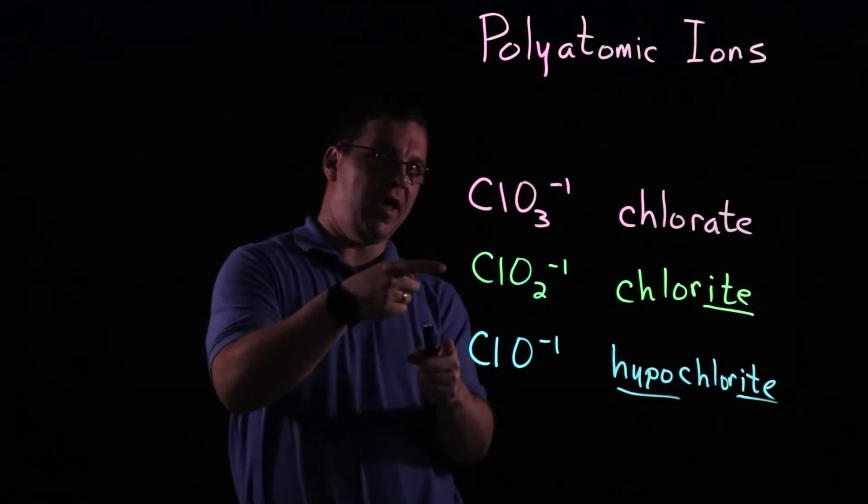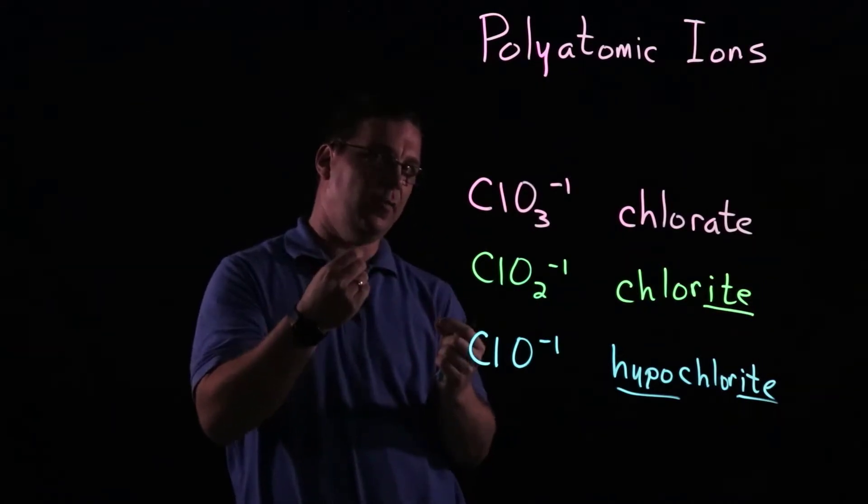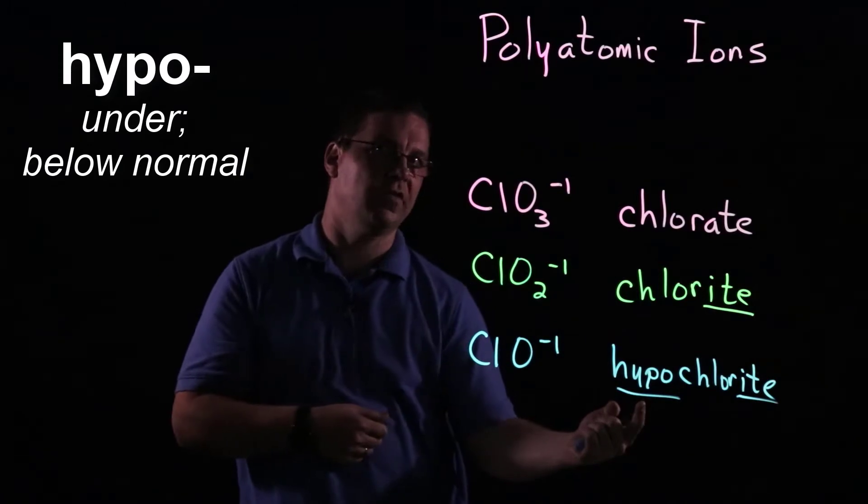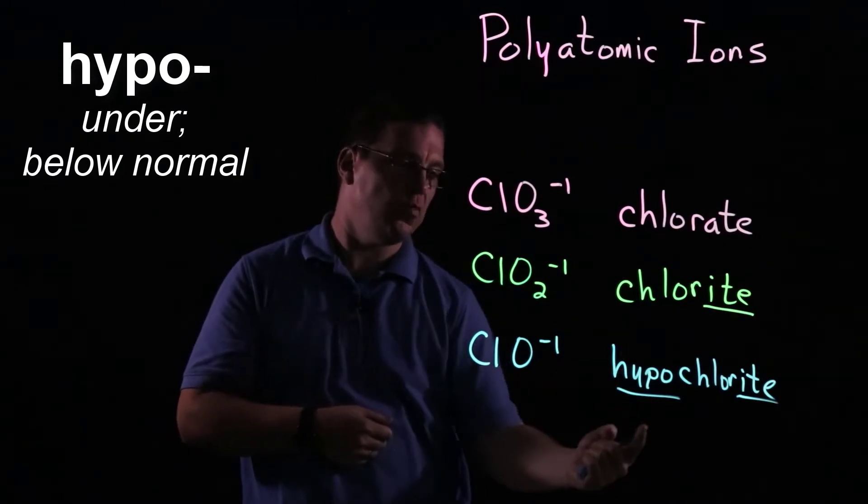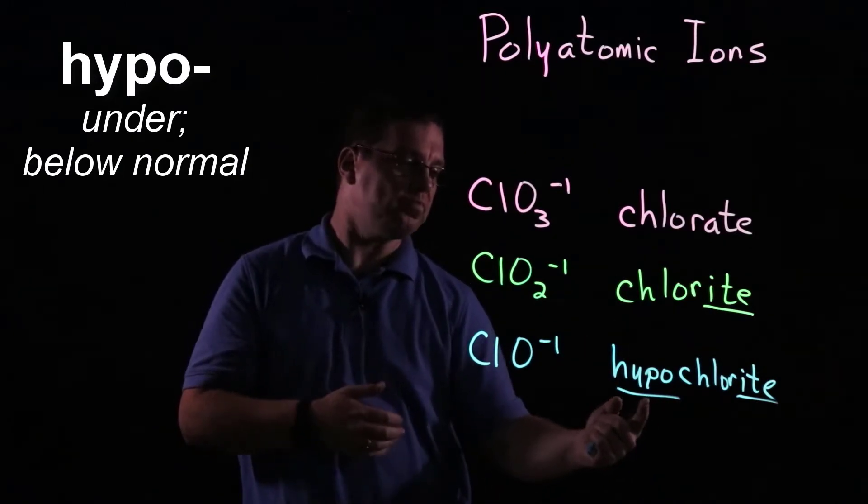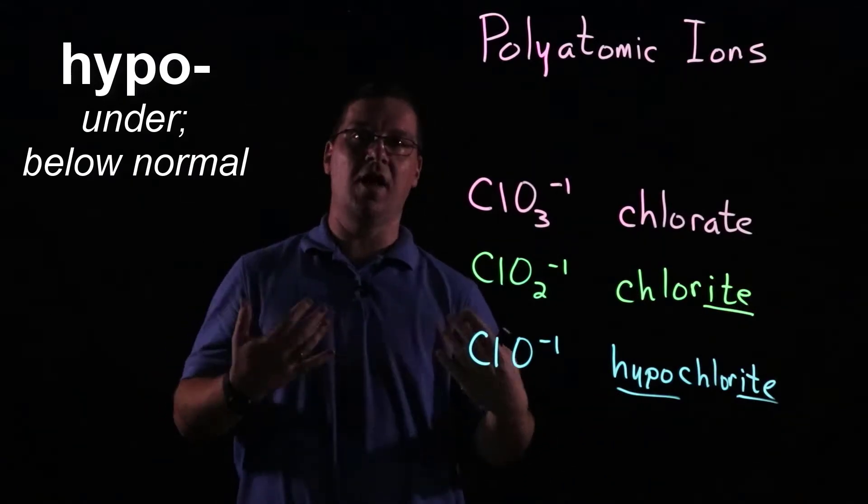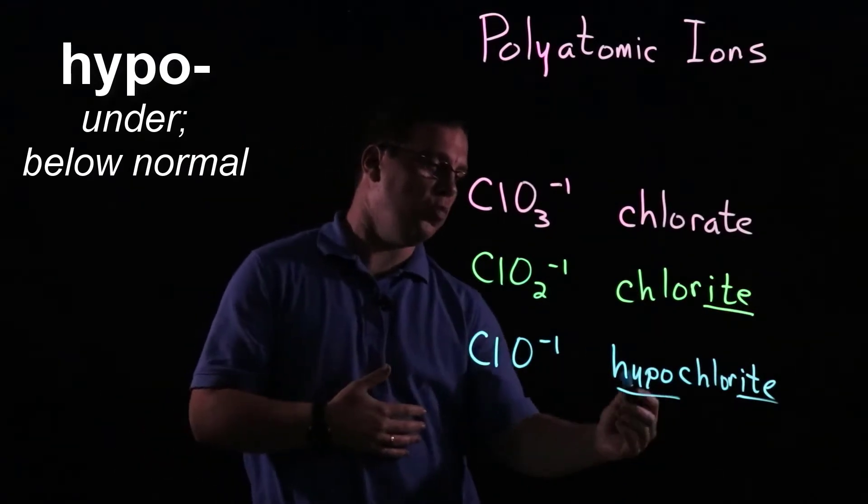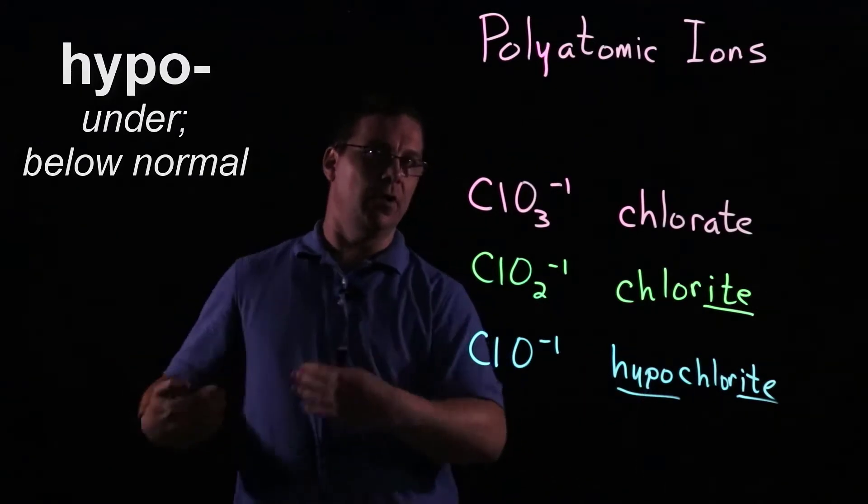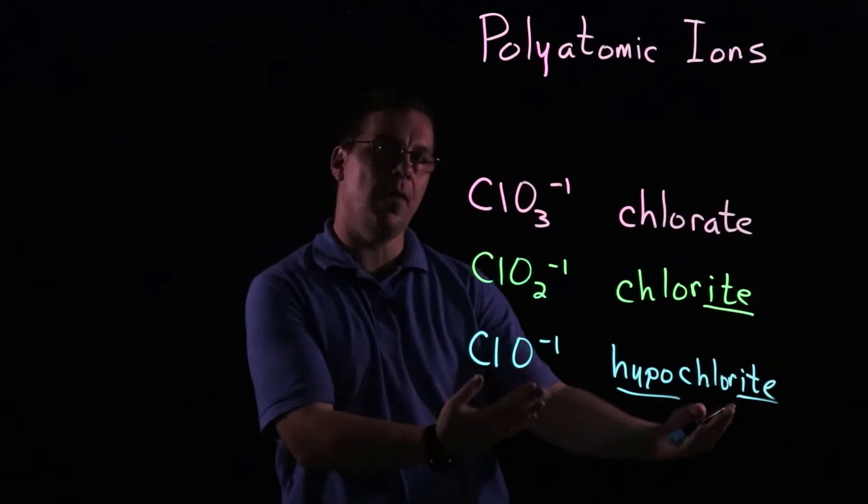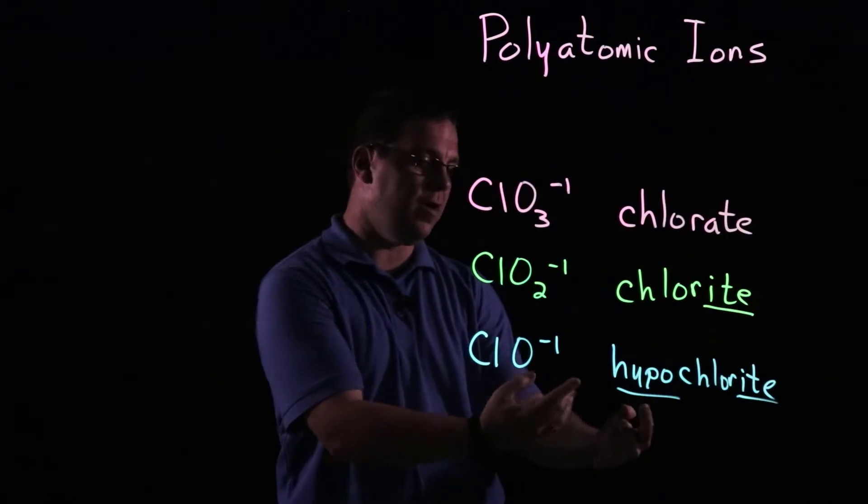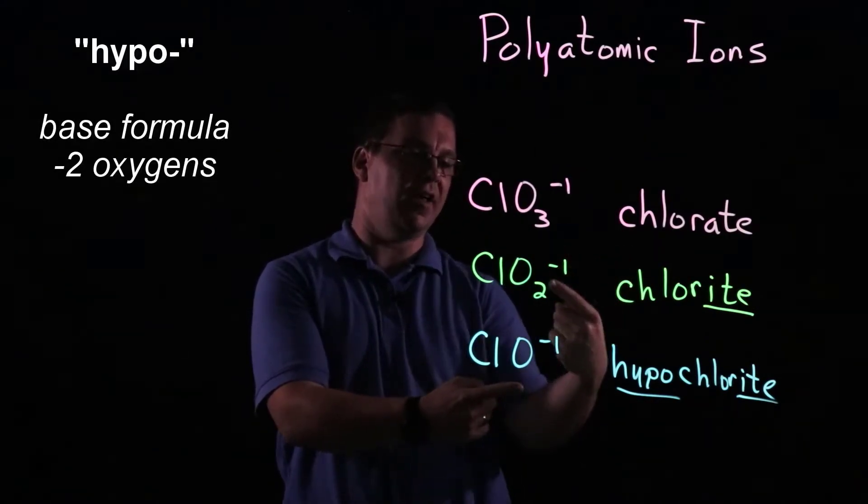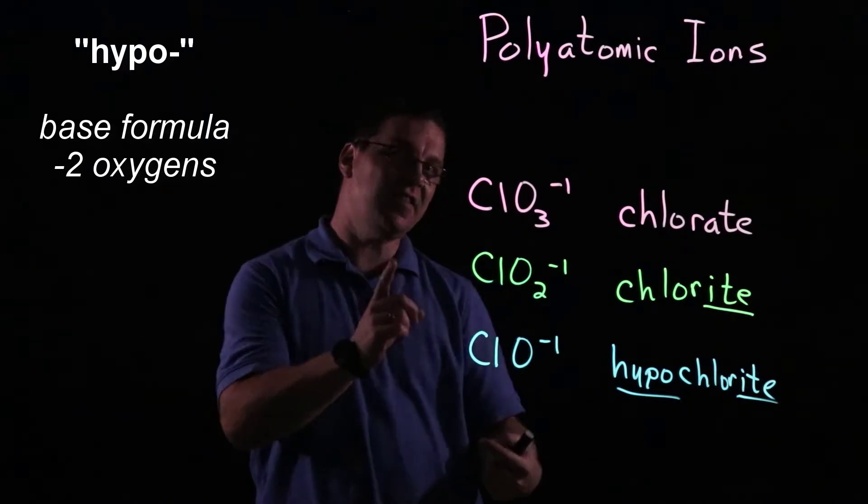These are both taking oxygens away, but they're different. So again, there has to be something to distinguish the two formulas, and that's where this hypo prefix comes in. This is a common prefix that we see if you talk about somebody that's hypoglycemic, they have low blood sugar. That hypo prefix means that you have an even lower number of something. So it's the combination of the I-T-E ending plus the hypo that tells you your number of oxygens is going to be two less than the base form.